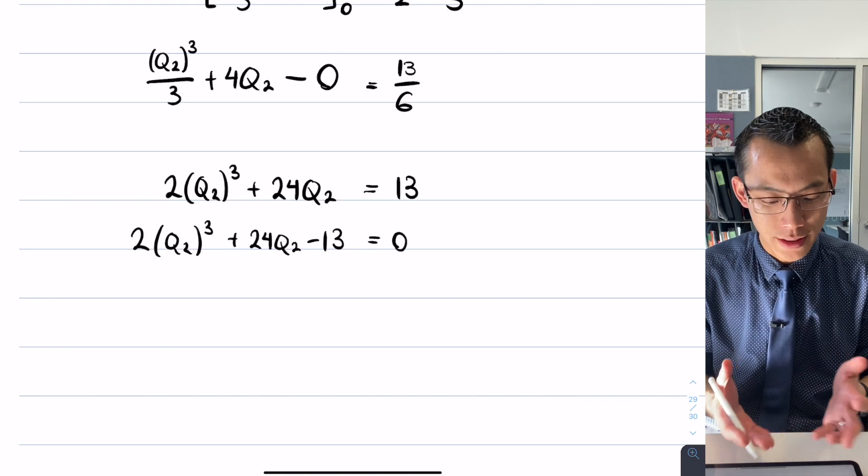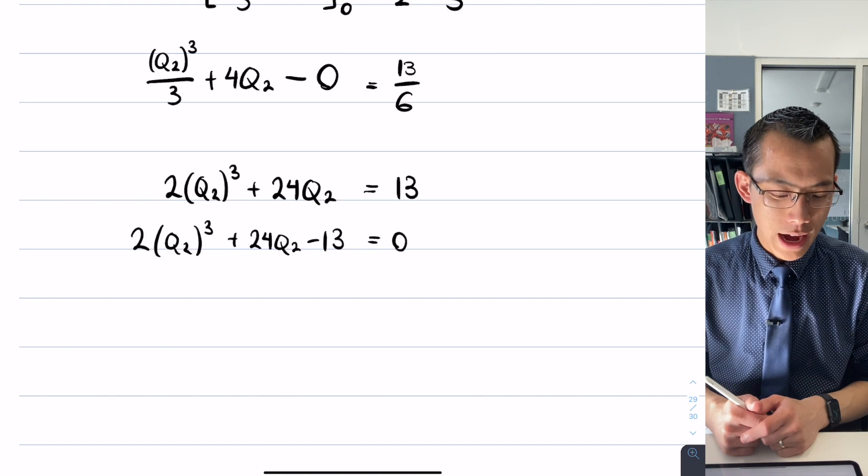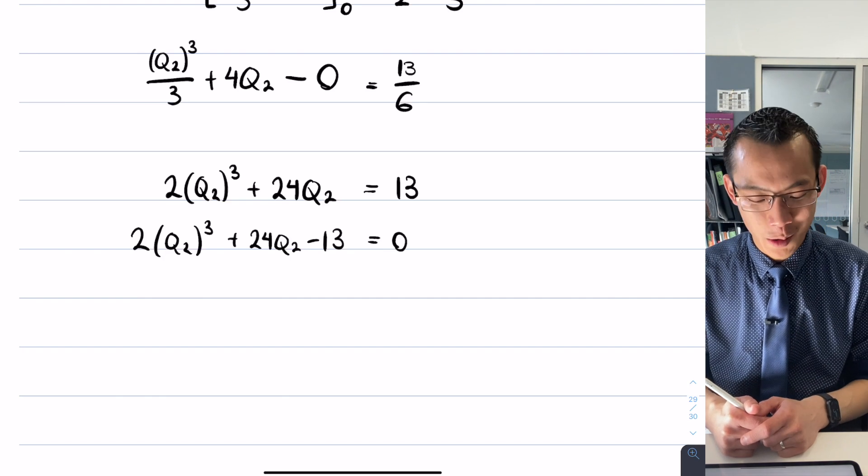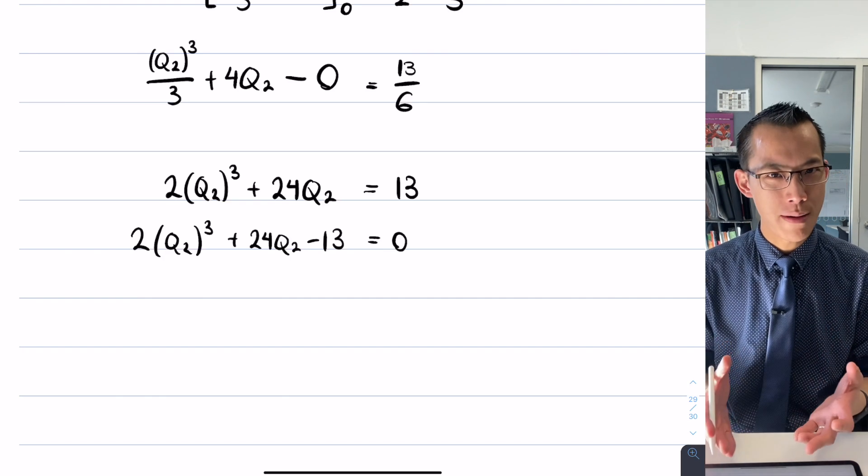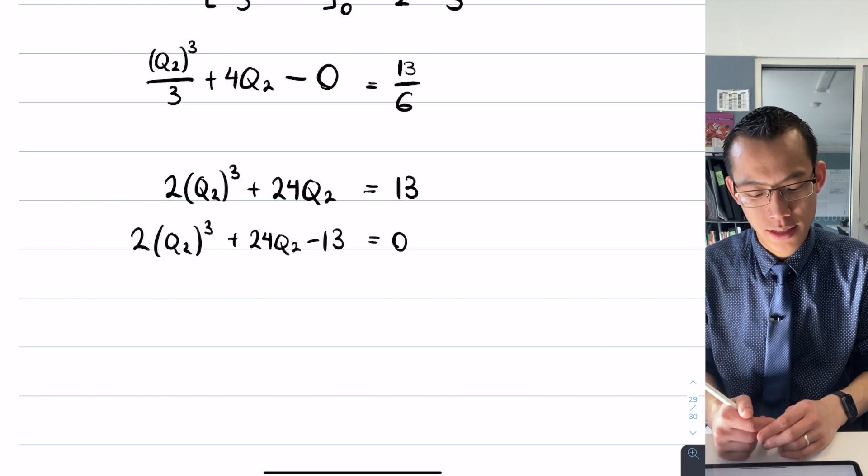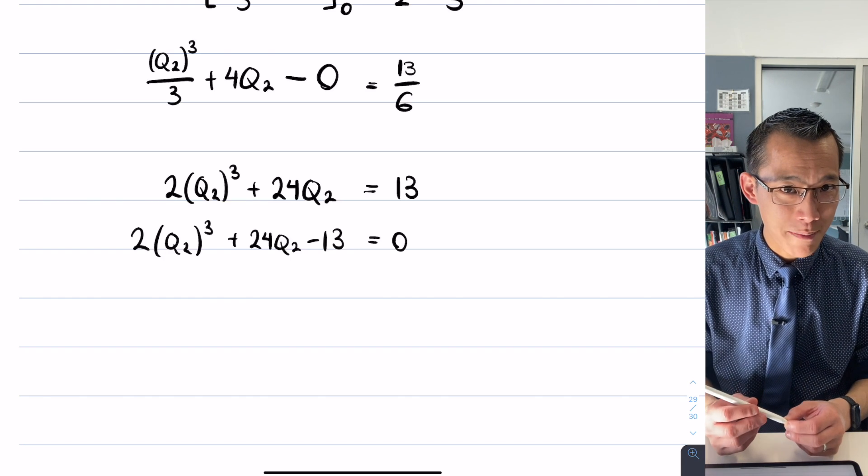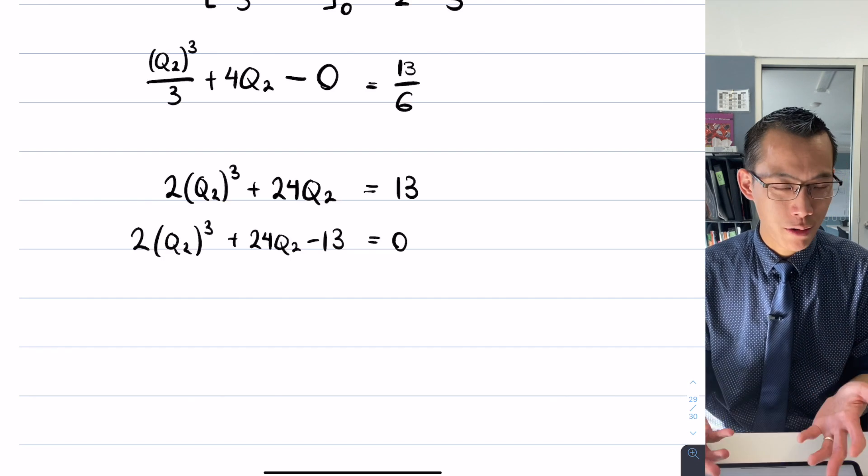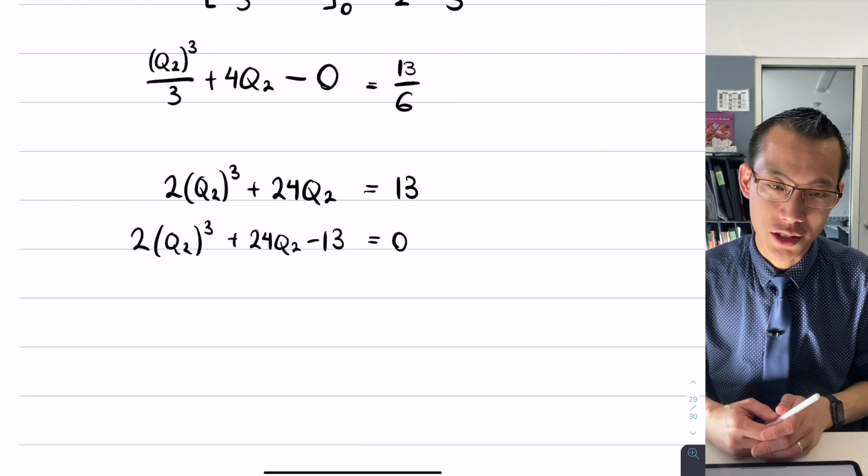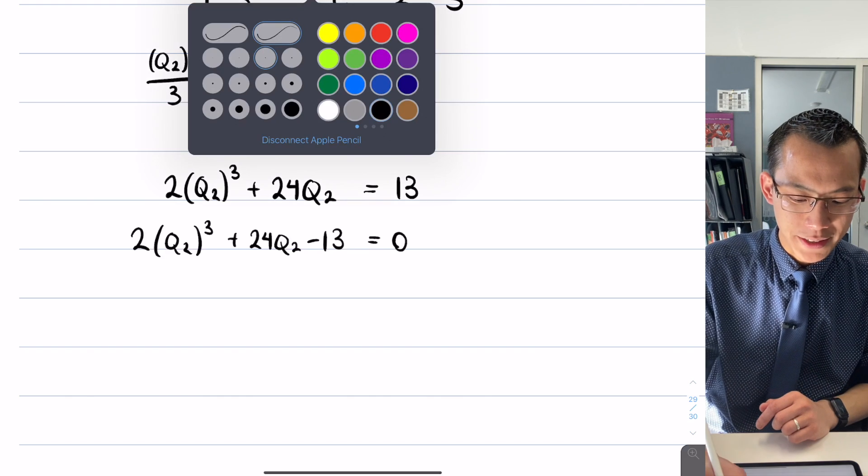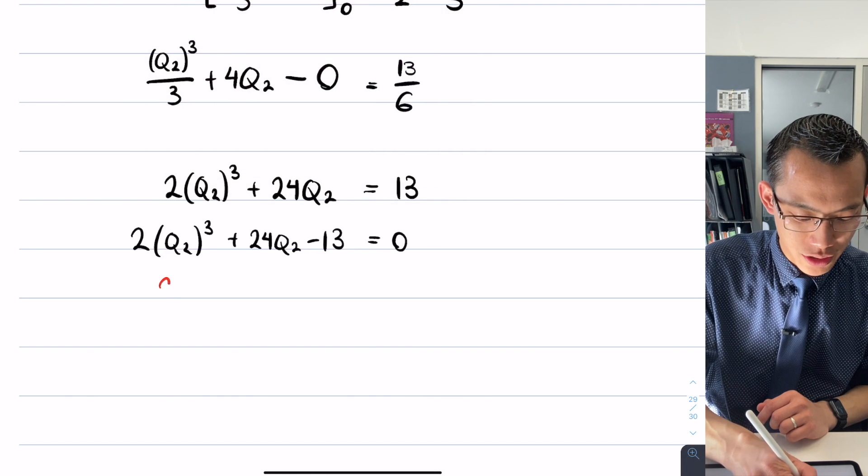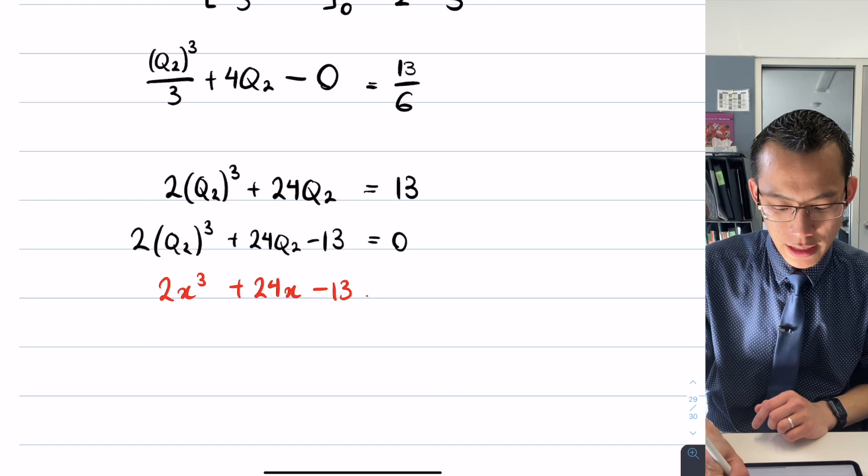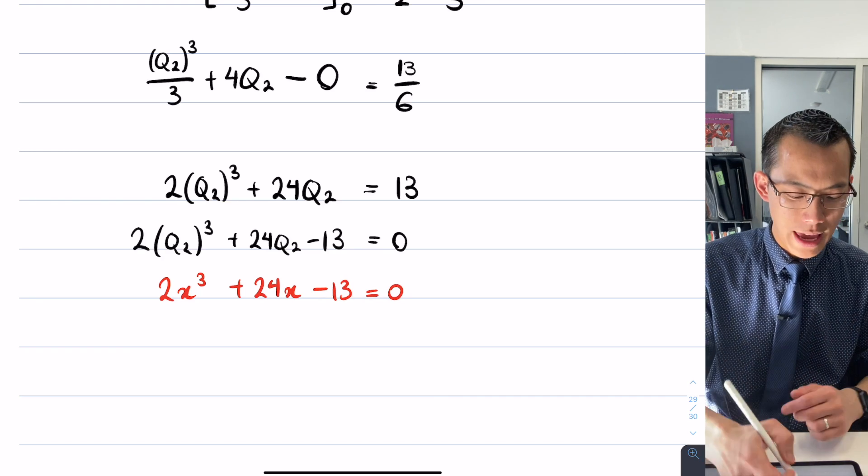I can't factorize out Q2 or something like that, so there's not going to be a simple way to find a factor. If you're an extension 1 student from the past, you could use Newton's method, but I'd rather not do that. So how can we work with this? The answer is with technology.